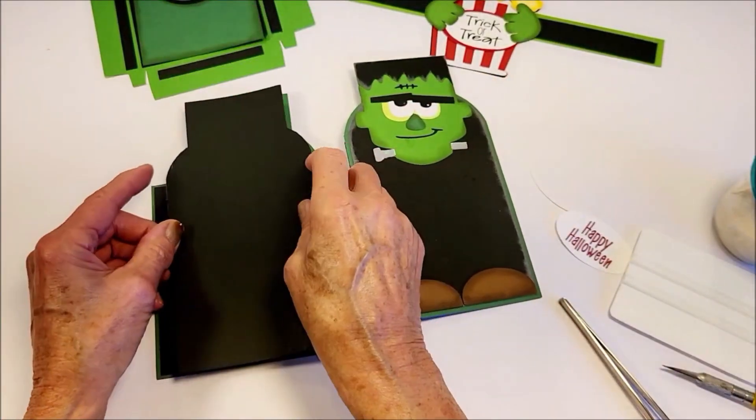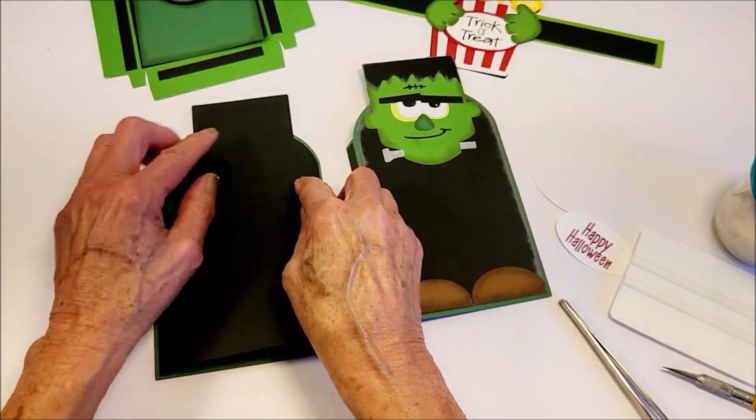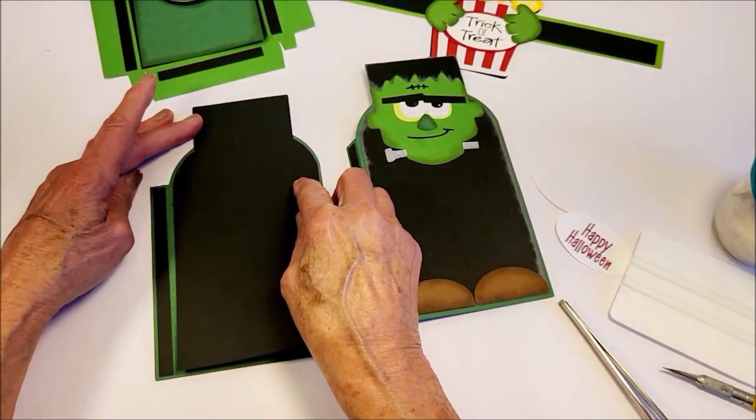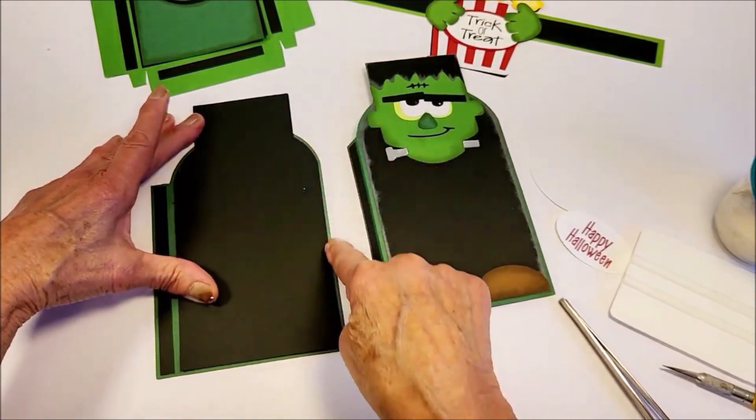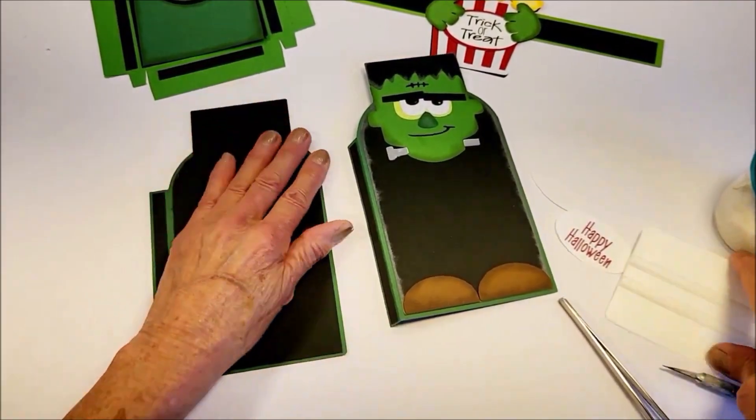And again like the front I line it up along the top and those sides, and this too is going to have that slight green border all the way around.